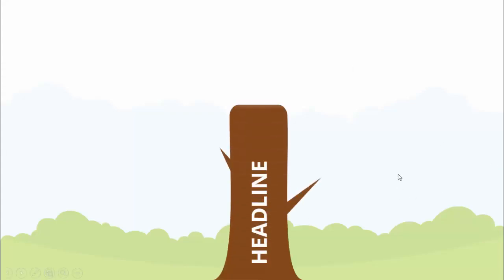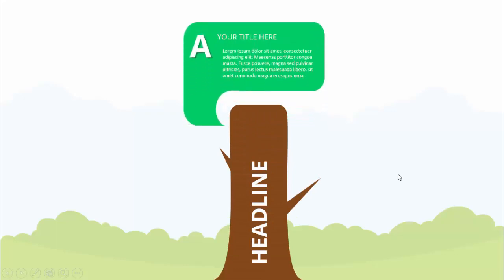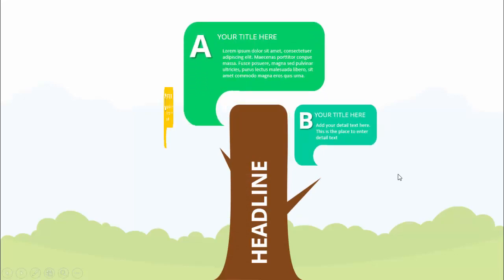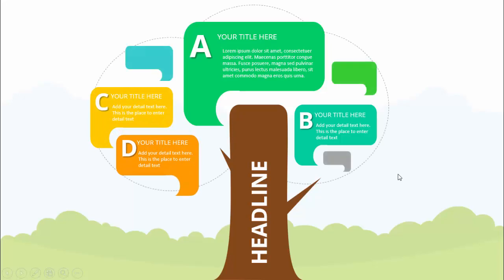In today's tutorial I am going to show you how to make a tree infographic slide in PowerPoint. This is how the slide works — I've added a background image, and when I click, the first headline comes, then Option A, Option B, Option C, and Option D.